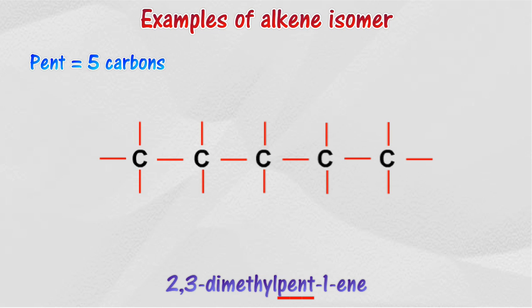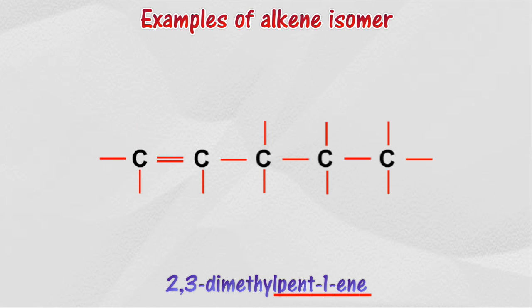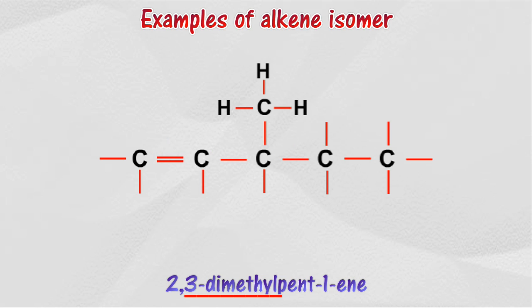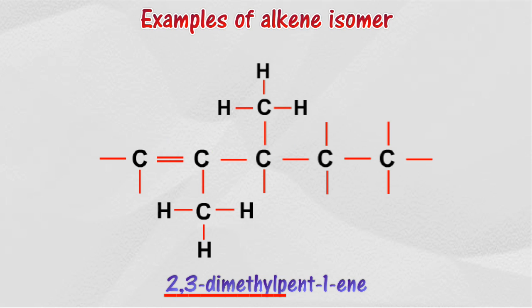There are 5 carbon atoms in the longest chain, so it's called pentene. The double bond position is at the first carbon atom, so it's called pent-1-ene. With methyl groups positioned at the second and third carbon atoms, it's called 2,3-dimethylpent-1-ene.